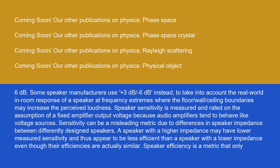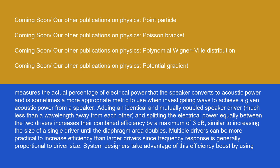Speaker sensitivity is measured and rated on the assumption of a fixed amplifier output voltage because audio amplifiers tend to behave like voltage sources. Sensitivity can be a misleading metric due to differences in speaker impedance between differently designed speakers. A speaker with a higher impedance may have lower measured sensitivity and thus appear to be less efficient than a speaker with a lower impedance even though their efficiencies are actually similar. Speaker efficiency is a metric that only measures the actual percentage of electrical power that the speaker converts to acoustic power.